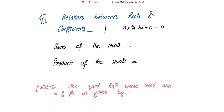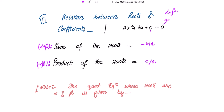Next is the relationship between the roots and the coefficients. For the quadratic equation ax² + bx + c = 0, the equation has power 2, meaning it has exactly two roots. The sum of the roots, α + β, equals −b/a: write the coefficient of x with a negative sign divided by the coefficient of x². The product of the roots, α·β, equals c/a: the constant divided by the coefficient of x².